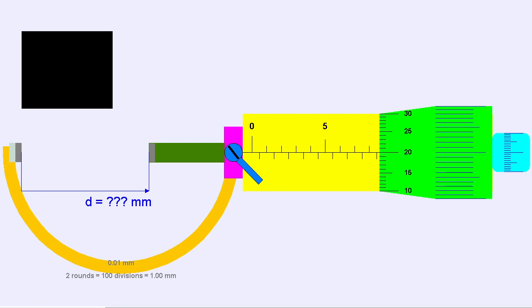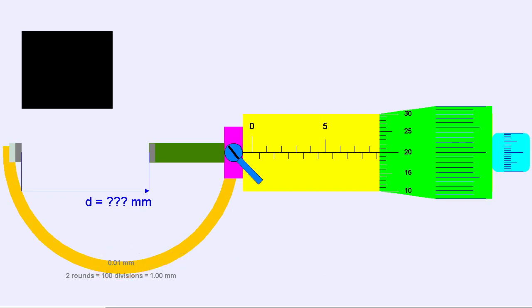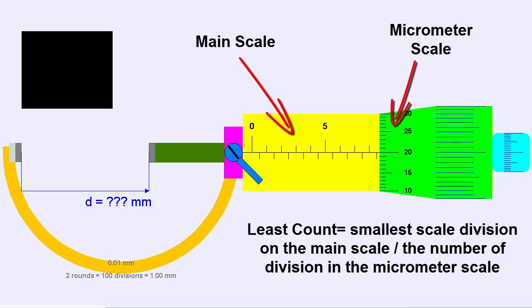First, we will get the smallest scale division or the least count of the micrometer scale. The formula for the least count is given by equation. LC is equal to smallest scale division of the main scale, divided by the number of divisions in the micrometer scale.